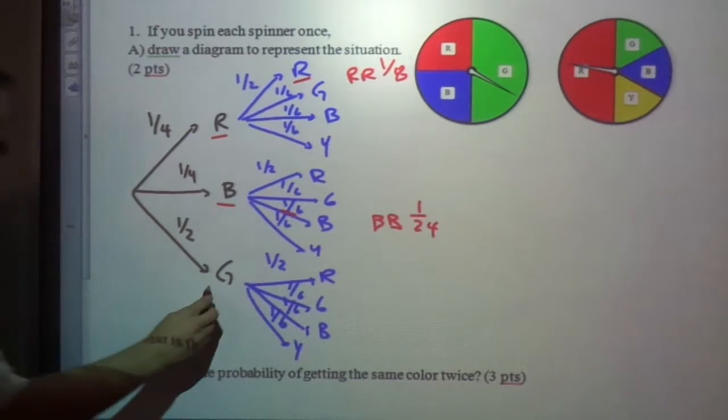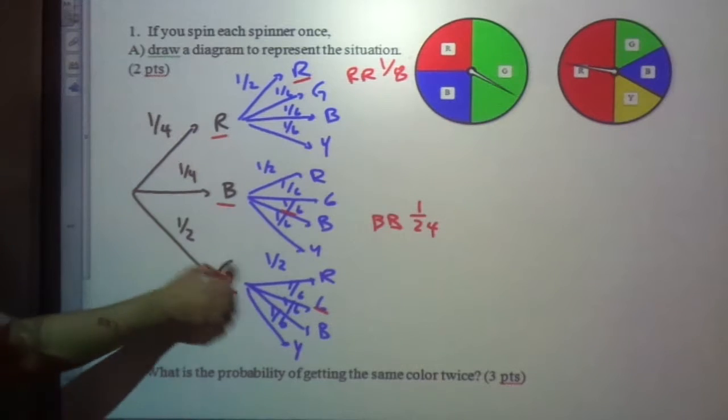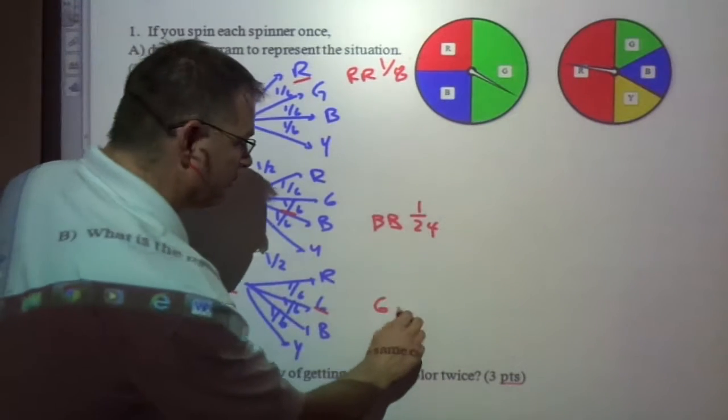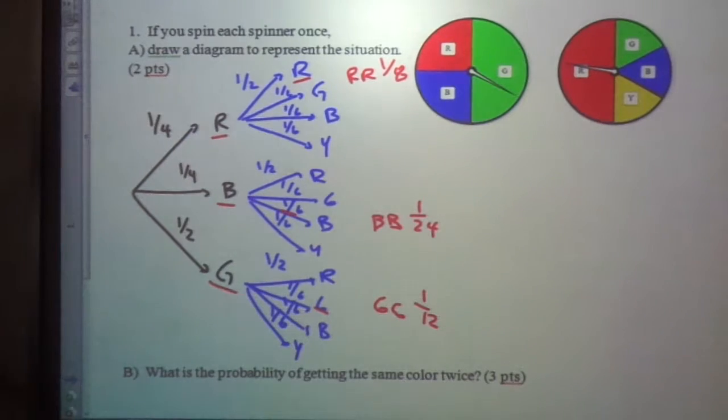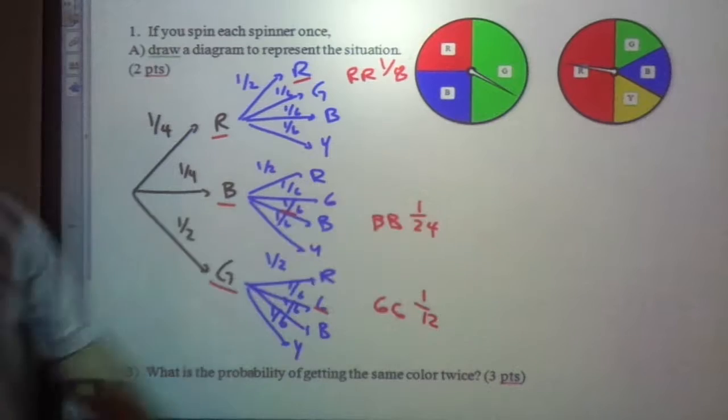Or we could go green, green, which is one-half times one-sixth, so green, green is one-twelfth. Can I go yellow, yellow? No, because there's no yellow here, right?